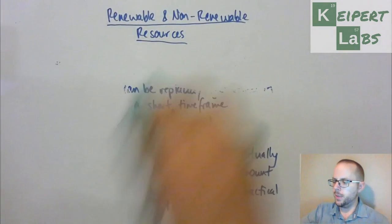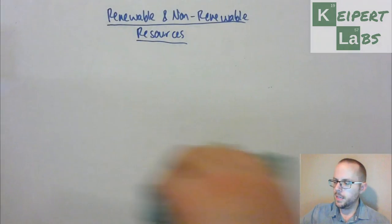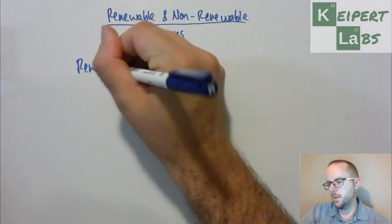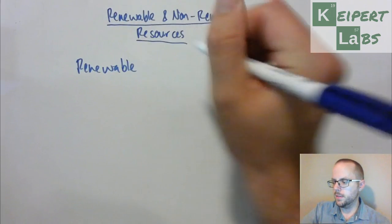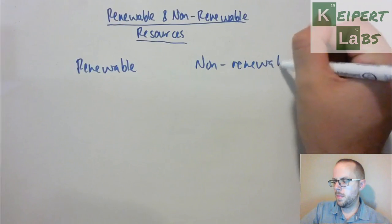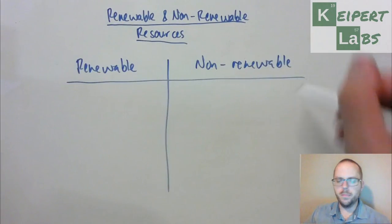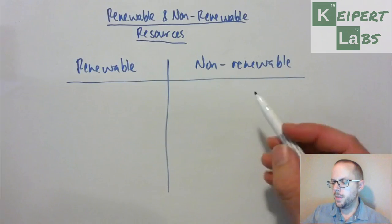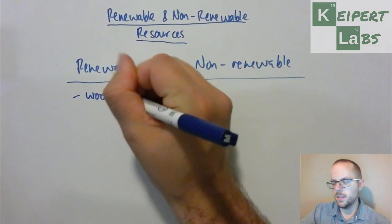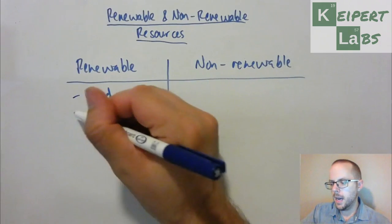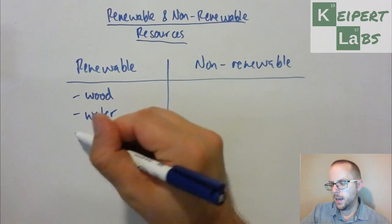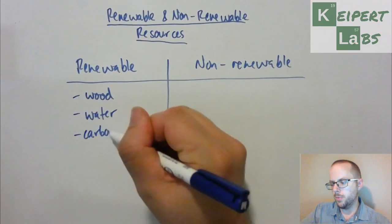Let's go through and list off some examples of what we might consider in each of these categories. I want you to set up a table with a column for each, and we're going to list off a few. Things that are renewable include things like wood, water, and carbon dioxide.